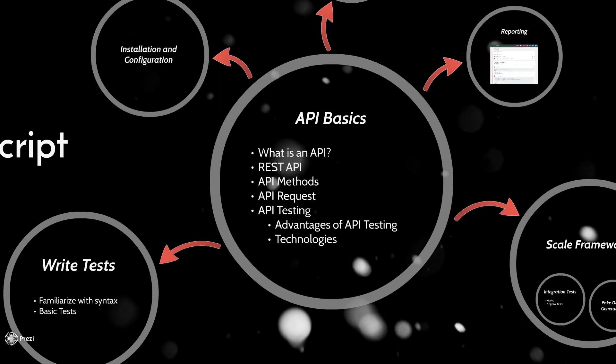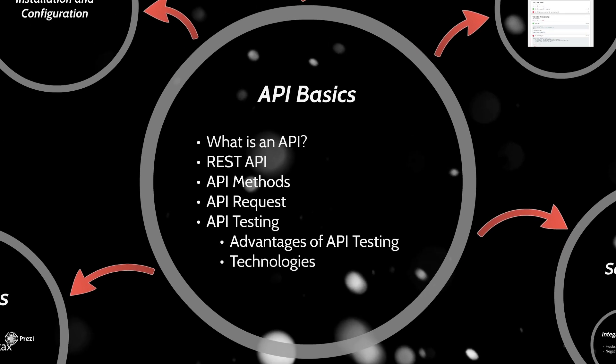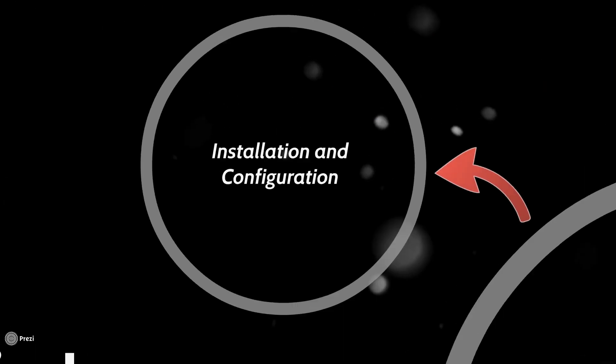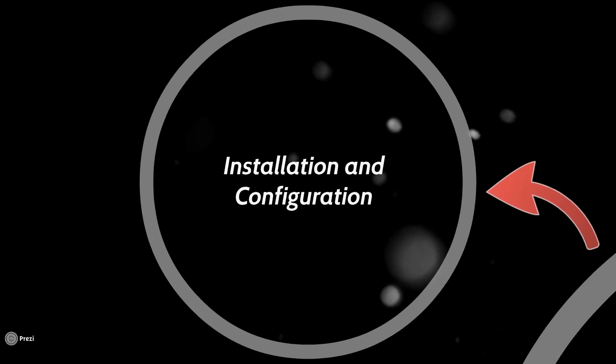We will start off with a quick overview on the basics of APIs — such as what is an API, what is a REST API, different types of API methods, what is contained in an API request — and then talk about what is API testing, the advantages of API testing, and the technologies we'll be using for API testing.